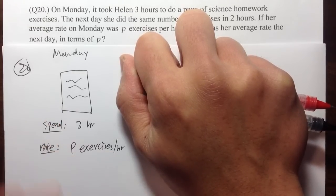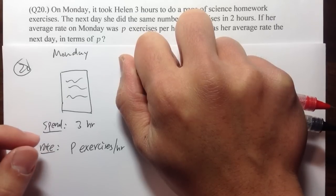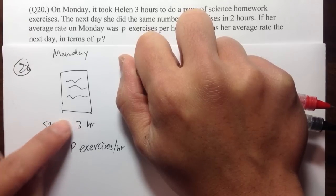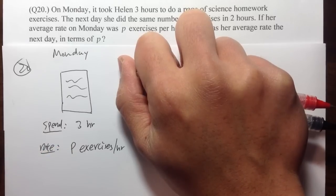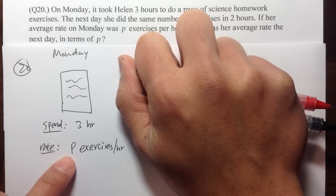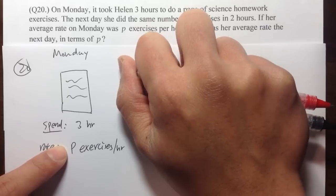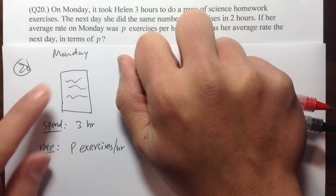40 exercises per hour. Then, if you have two hours, then she will be able to do 80 questions, and if she has three hours, we just need to do three times 40 to get the number of questions that she can do within three hours. So if P was 40, we just need to do three times 40, and that would be 120 for the number of exercises that she did on Monday.